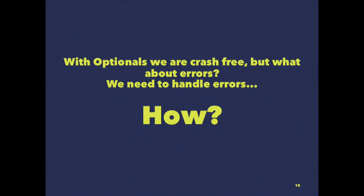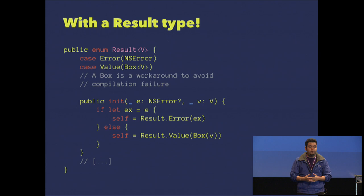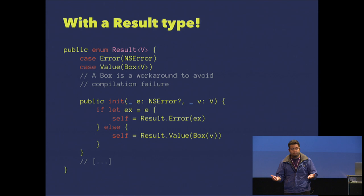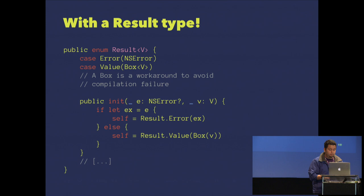The next evolution is: it's nice that I manage optionals and nils, but I'm not managing errors. If I have an error like no internet connection, I want to deal with it and create an alert. The solution is a result type. We create the result type and say: if the computation is okay, I return a result; if not, I return an error. This structure gives me a lot more information about my computational result.